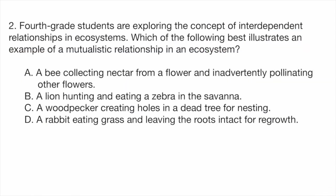Question 2. Fourth grade students are exploring the concept of interdependent relationships in ecosystems. Which of the following best illustrates an example of a mutualistic relationship in an ecosystem? A, a bee collecting nectar from a flower and inadvertently pollinating other flowers.